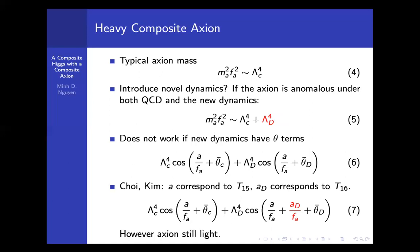However, this naive model doesn't work because typically when one introduces a new dynamics, it's going to have some topological properties and typically going to have theta terms. The axion is going to tend to align with the theta term of the heavier scale, which means they're going to align to theta_D of the new strong sector. Now you have a misalignment, so it fails to solve the strong CP problem.